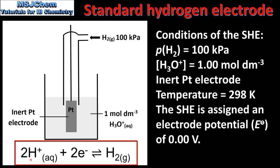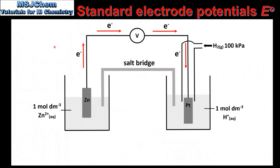Next we'll look at how the SHE is used to measure standard electrode potentials. To measure the standard electrode potential of a half cell it is connected to the standard hydrogen electrode. In this diagram we have a zinc half cell connected to the SHE via an external circuit and a salt bridge. The reading on the voltmeter shows 0.76 volts. Looking at the direction of electron flow, we can see they are moving from the zinc half cell to the SHE, telling us that the zinc half cell is the anode and the SHE is the cathode.